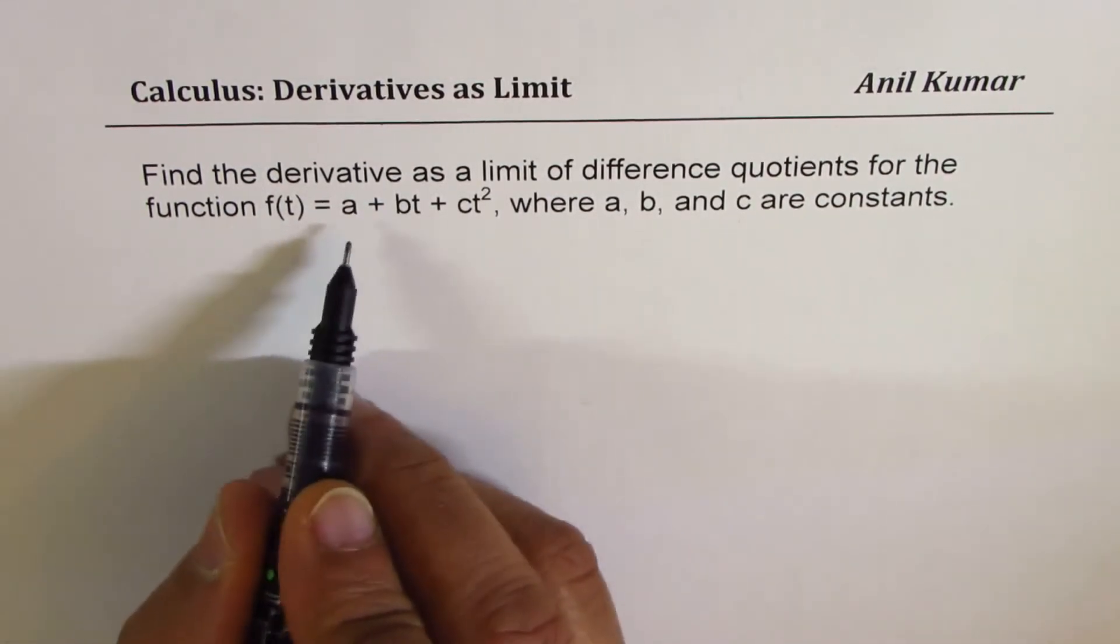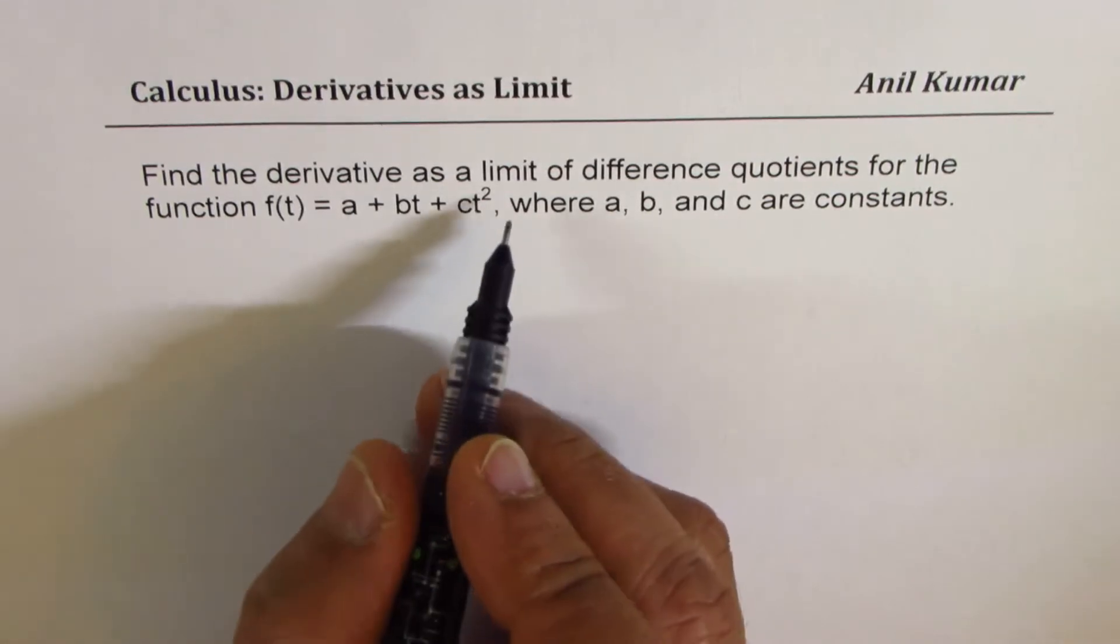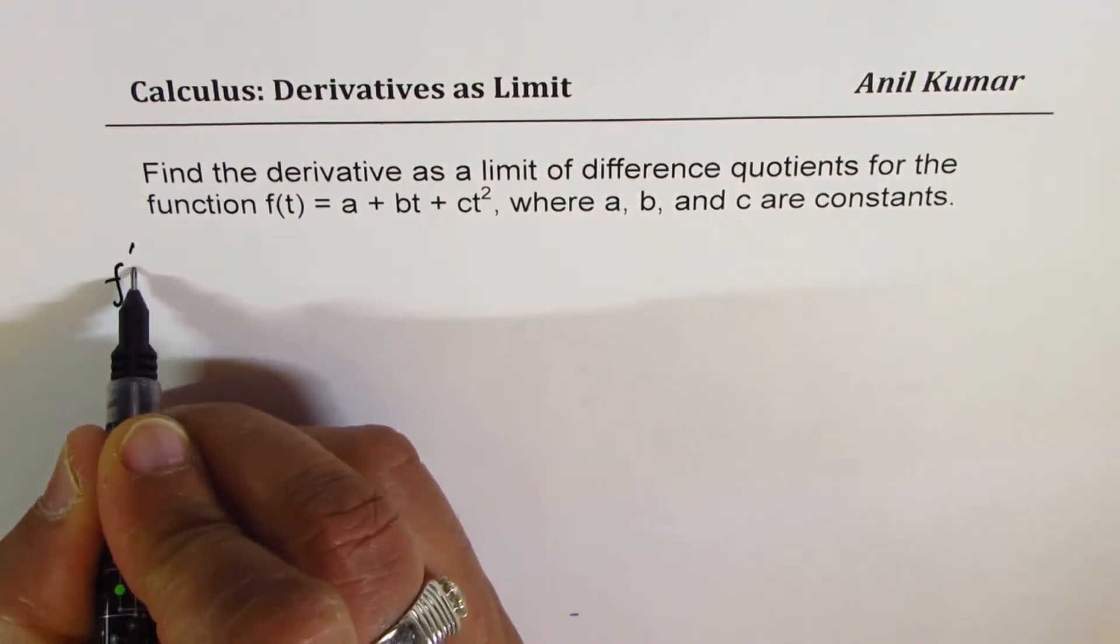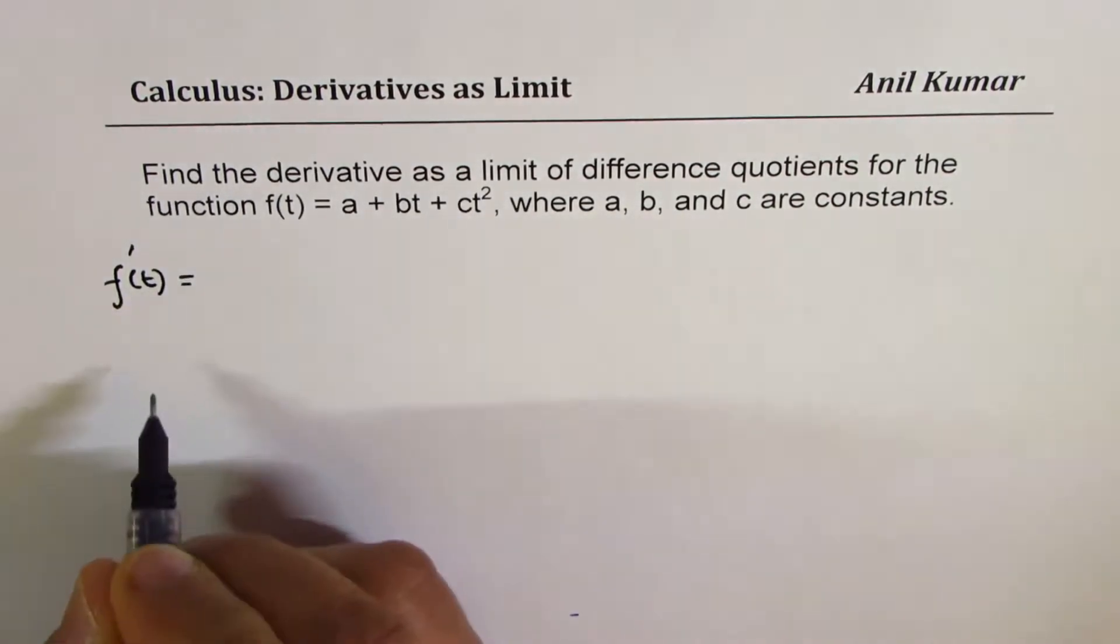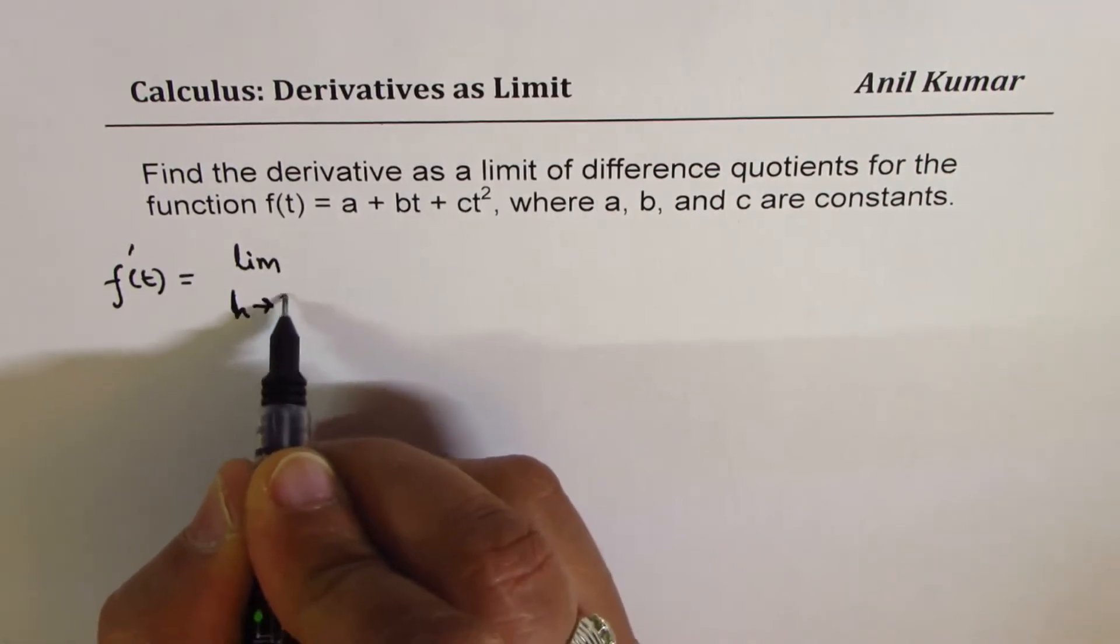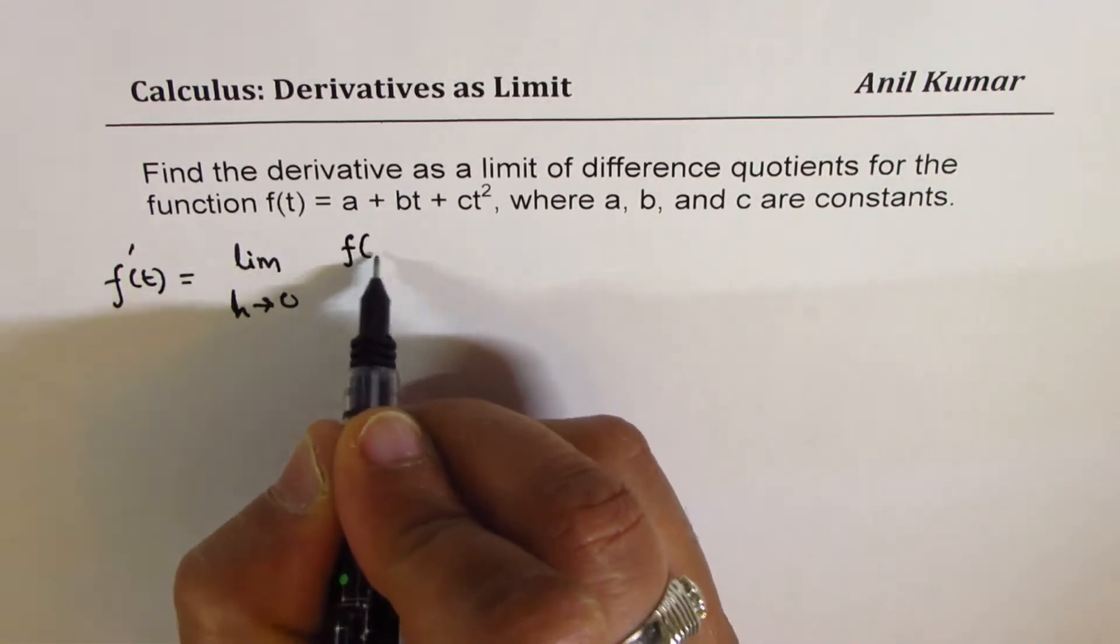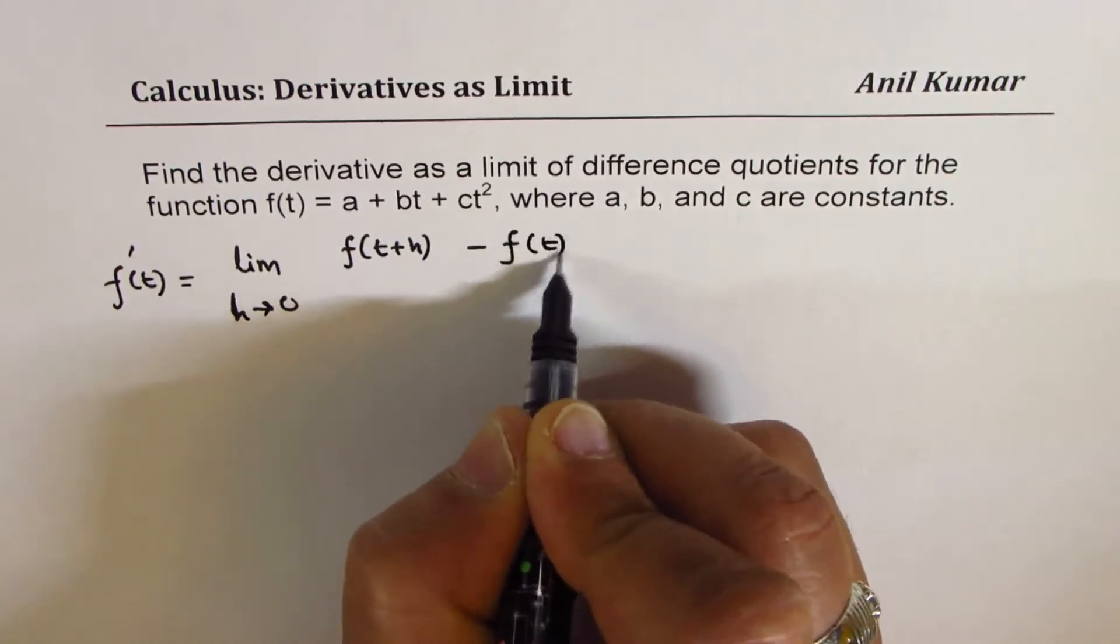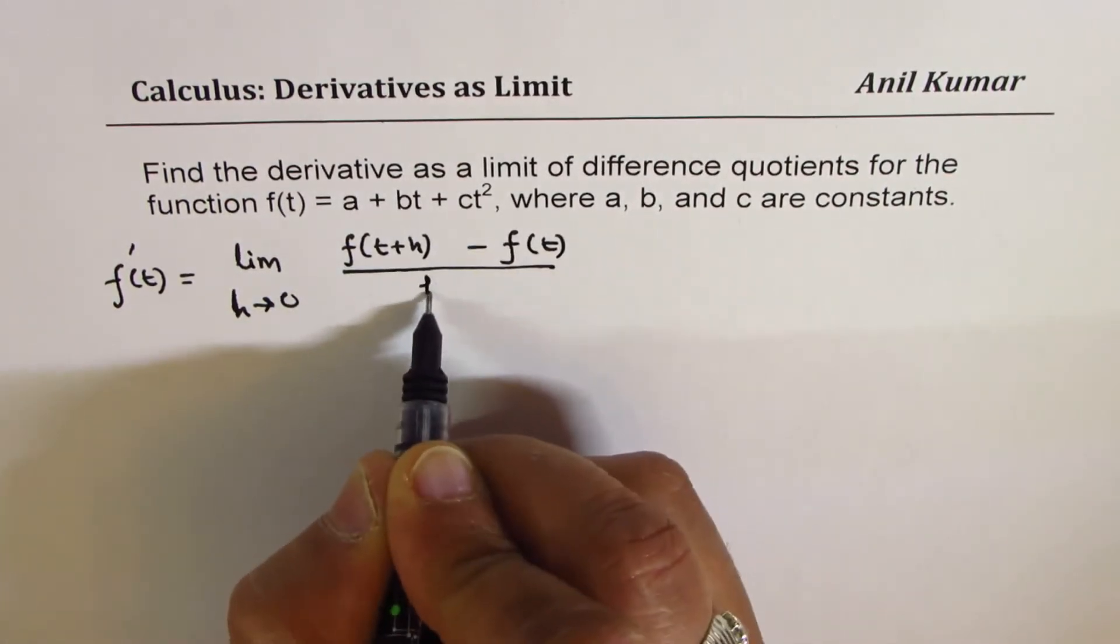We are given the function f of t. The derivative, which could be written as f dash t, is basically equal to limit h approaches 0 for f of t plus h minus f of t over h.